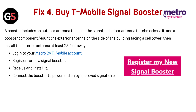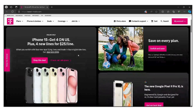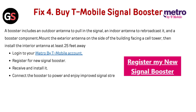Fix 4: Buy a T-Mobile Signal Booster. A booster includes an outdoor antenna to pull in the signal, an indoor antenna to rebroadcast it, and a booster component. Mount the exterior antenna on the side of the building facing a cell tower, then install the interior antenna at least 25 feet away. Log in to your Metro by T-Mobile account — or use the link in the description — to register for a new signal booster, then receive, install, connect it to power, and enjoy improved signal strength.